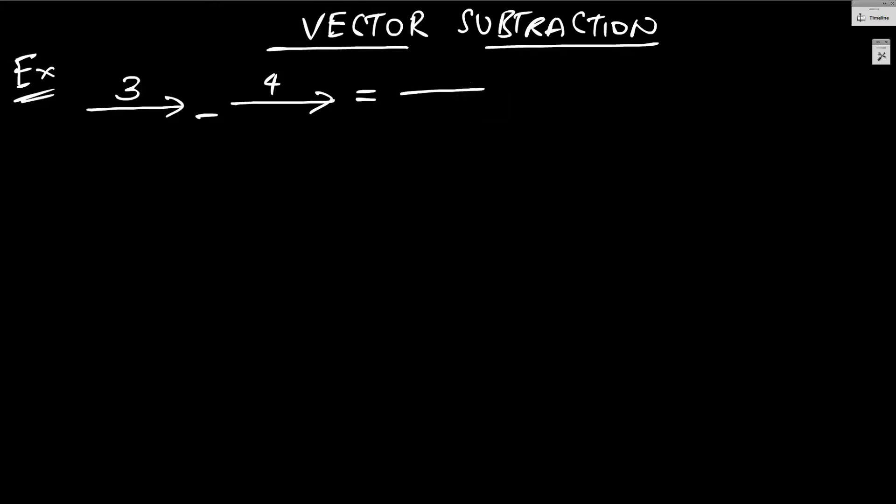Well, I would write this as vector 3 plus negative of vector 4. What's the meaning of negative of a vector? Well that is actually very easy.